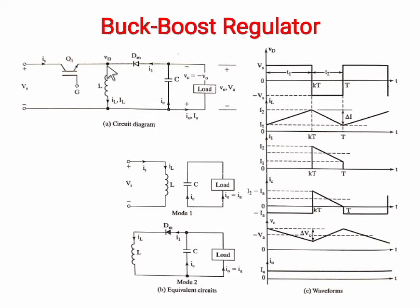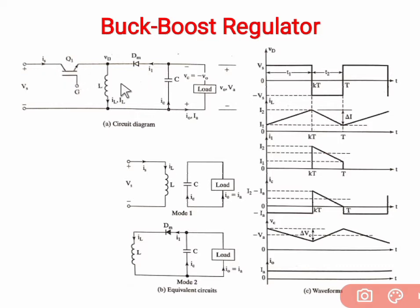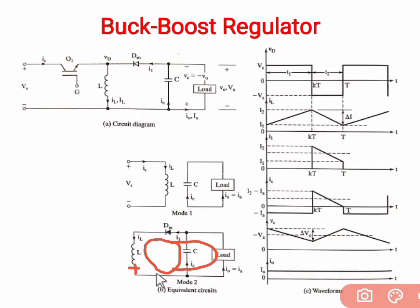During mode one, transistor is on so we get positive signs and the diode is in reverse bias conditions — no current flows through the diode. Current flows through the switch and through the inductor. During mode two, Q1 is off so no input current IS flows. The inductor acts as the energy source; the terminal becomes positive and current flows from the inductor to the capacitor, with DM in forward bias, conducting current also through the load.